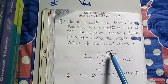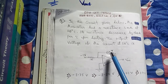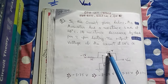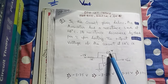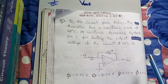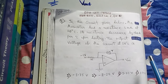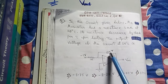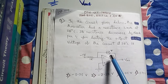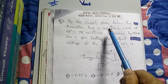This happens because the thermistor has a property called negative temperature coefficient of resistivity. In semiconductors, when you increase the temperature the resistance decreases, and when you decrease the temperature the resistance increases. Since our thermistor is a semiconductor device, it also has a negative temperature coefficient of resistivity. Whereas for normal conductors like iron and copper, we have a positive temperature coefficient — resistance increases with temperature.